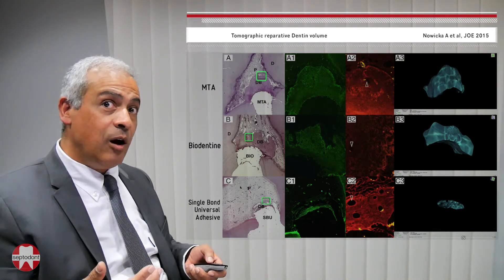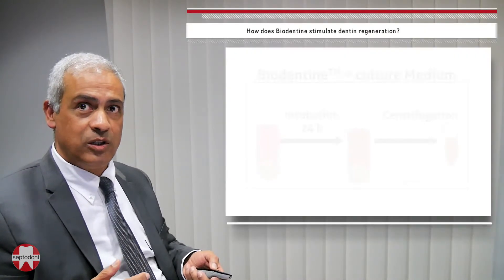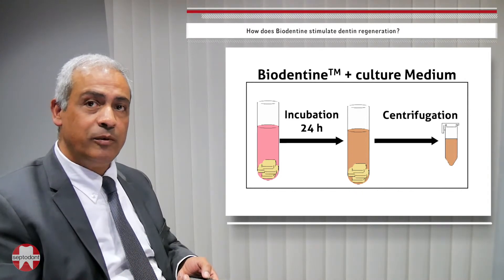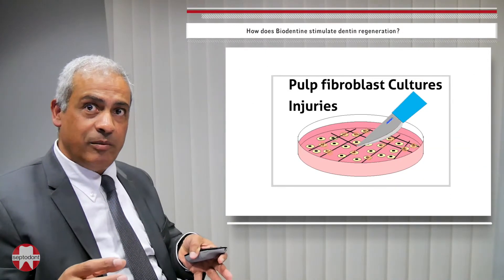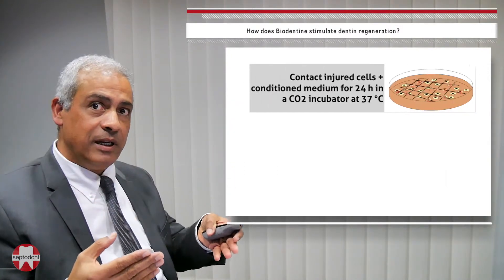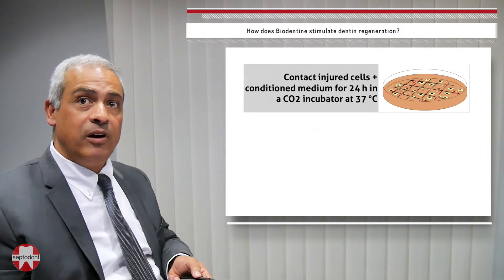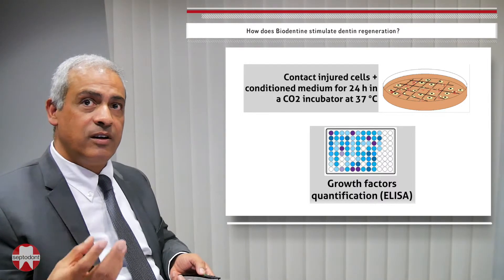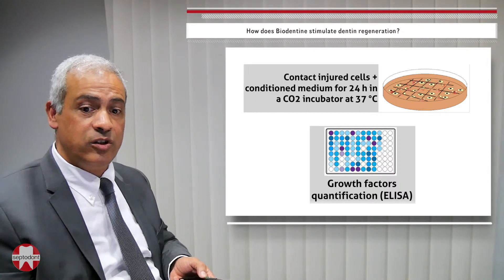To understand how this dentin bridge formation occurs, we simulated the situation in vitro: we incubated biodentine with culture medium, applied it on pulp fibroblasts, made injuries as if injuring the pulp, then applied biodentine to these injured cells and measured growth factor synthesis. We found that angiogenic growth factors are synthesized and produced, and angiogenesis is essential for the regenerative process.